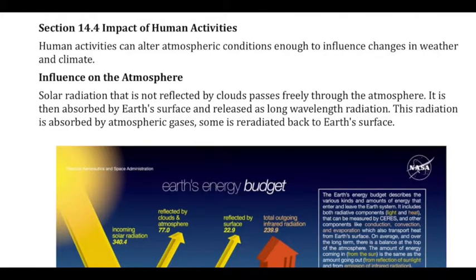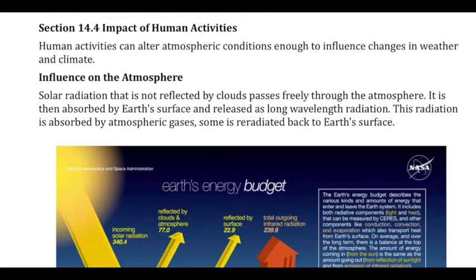One thing that can change the weather and the climate is the amount of sunlight. If you have lots and lots of clouds, the sunlight can actually bounce off of the tops of those clouds and not actually reach the ground. But there's another problem — the clouds can act like a blanket, and that blanket quality means that if there's energy that passes through the clouds and hits the ground and bounces back, it can actually bounce off with a different wavelength.